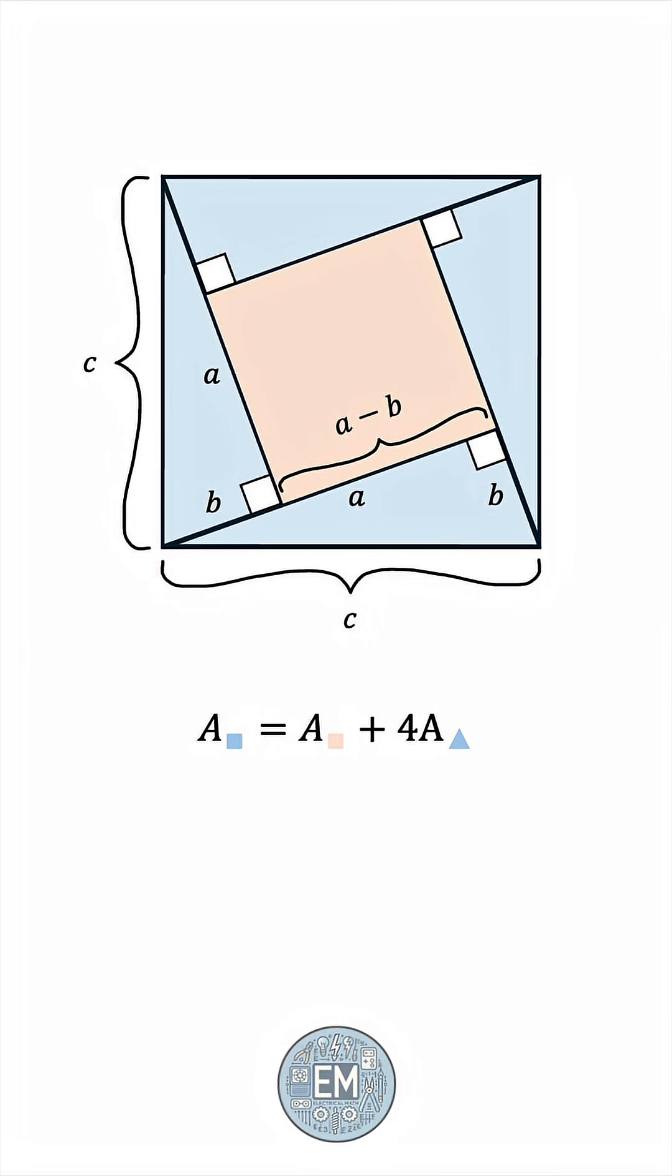The big square has side length C, so its area must be C squared. The inner square has side length A minus B, so squaring it, we get its area.